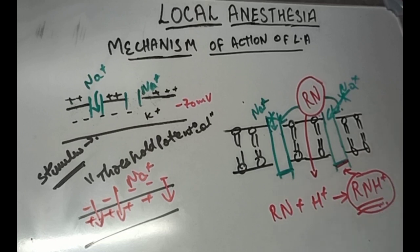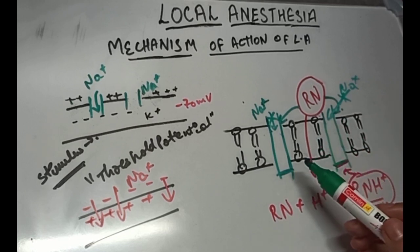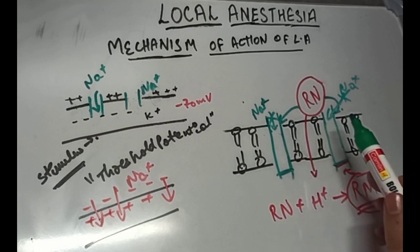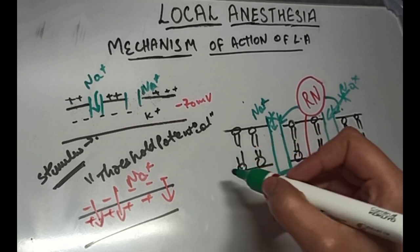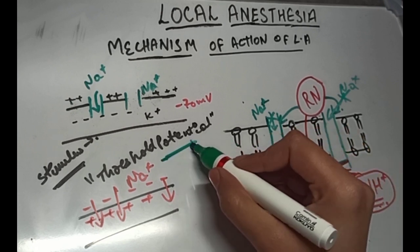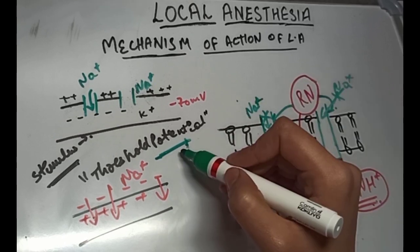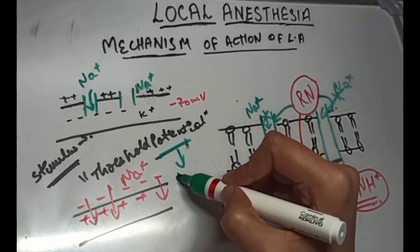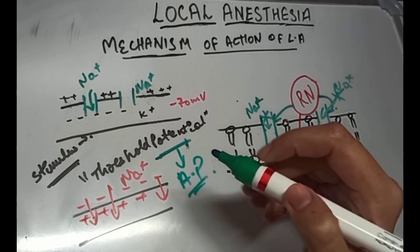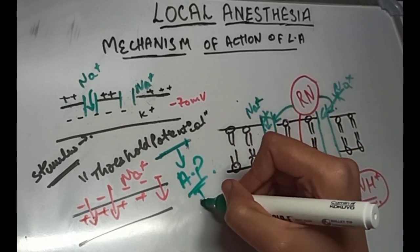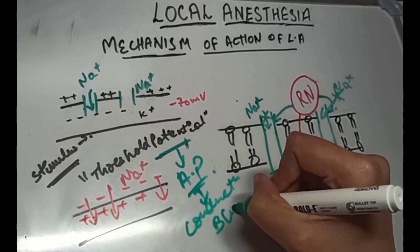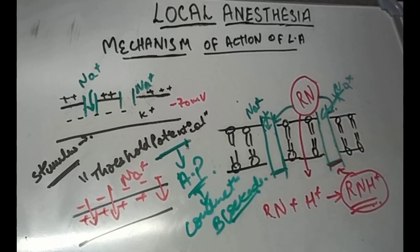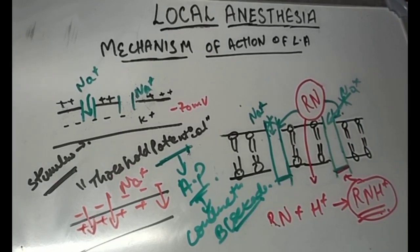Because the sodium voltage-gated channels are blocked, there is a decrease in permeability to sodium ions. This causes a depression of the rate of electrical depolarization and failure to achieve the threshold potential. As a result, there is no propagated action potential, ultimately leading to conduction blockade. That is how LA blocks nerve conduction — that is the mechanism of action of local anesthesia.